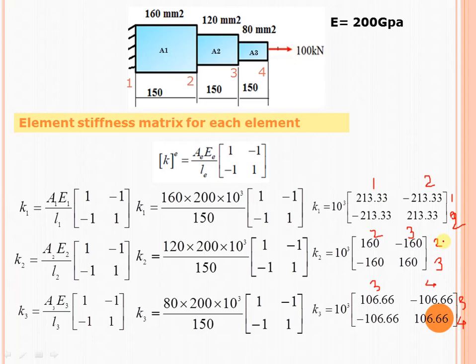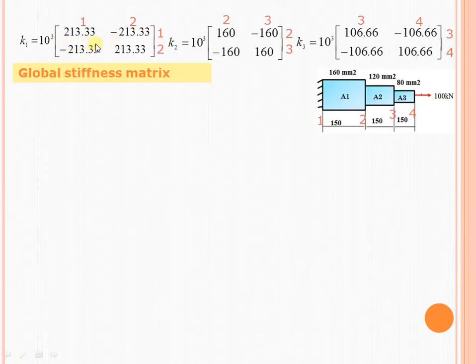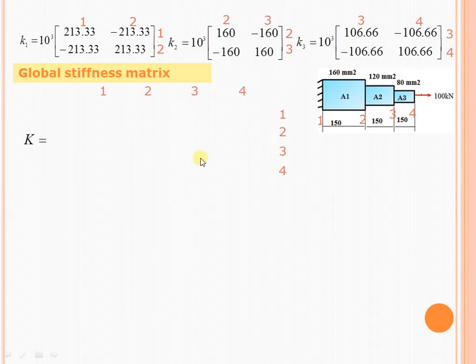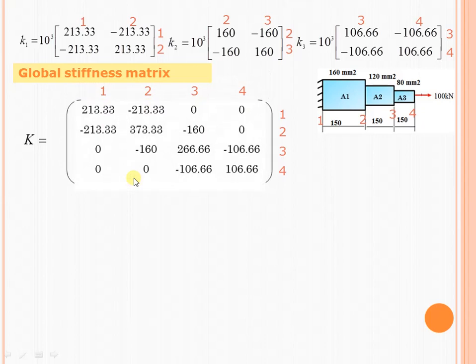Now let's write the global stiffness matrix. We have already calculated the elemental stiffness matrices for 3 elements and written the elemental connectivity. To get the global stiffness matrix, we add these 3 elemental stiffness matrices: K = k1 + k2 + k3. For this problem, there are 3 elements and 4 nodes, and for a 1D problem each node has 1 degree of freedom per node, so the size of the global stiffness matrix is 4×4.